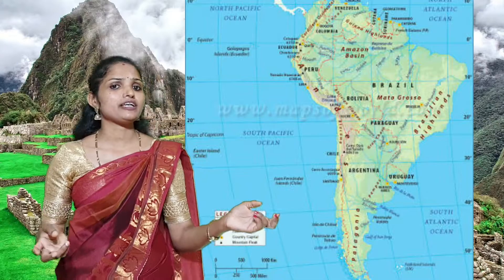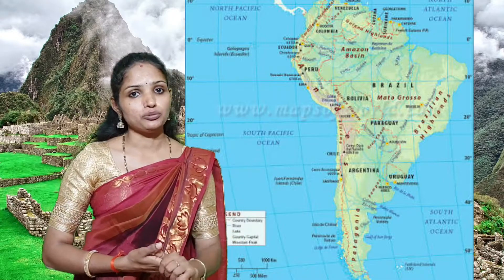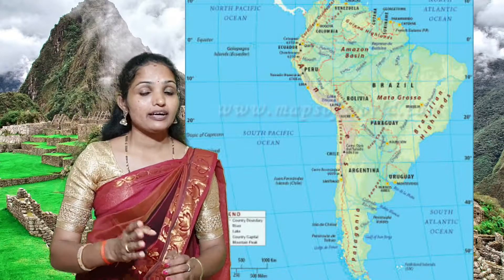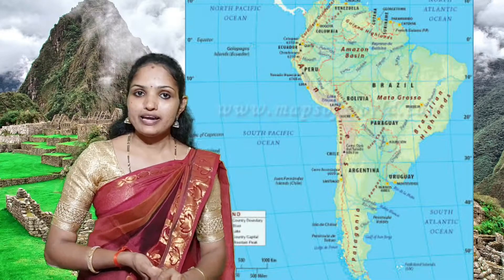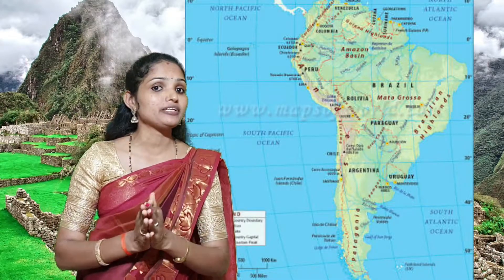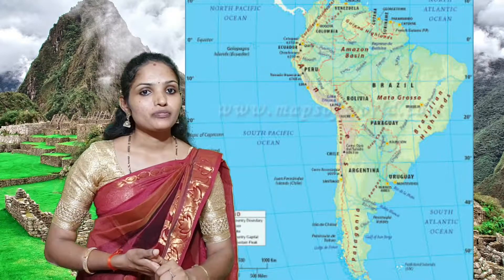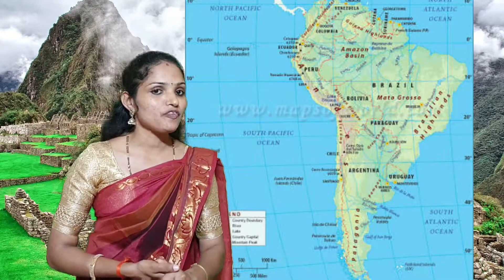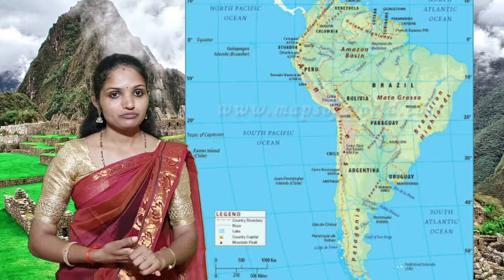The latitudinal and longitudinal extent of South America is 12 degrees north to 56 degrees south latitude, and 35 degrees west to 81 degrees west longitude. You can see this in the picture.